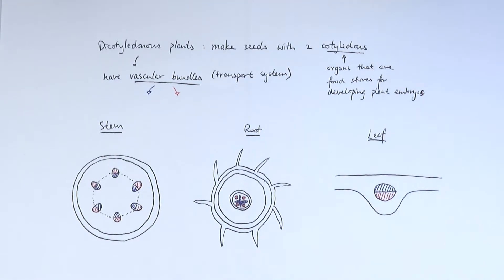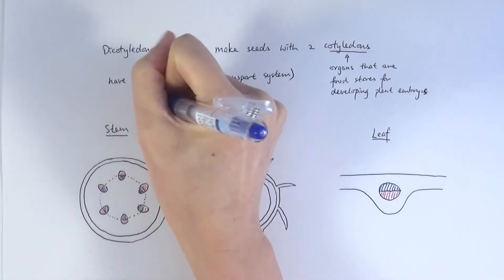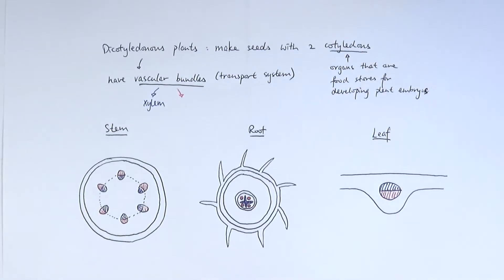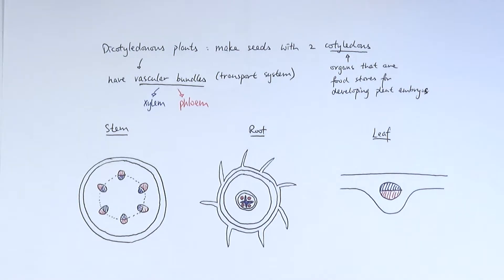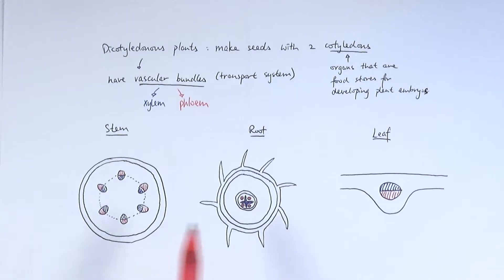The vascular bundle is basically made up of two different types of vessels. The first one is the xylem and the other one is the phloem. You'll need to be able to draw these particular cross-sections in the stem, roots, or sometimes in leaves, although the leaf one would be a little bit less common. Most common ones you would need to draw will be the stem and the roots. So let's make sure that we know the labels of these first.